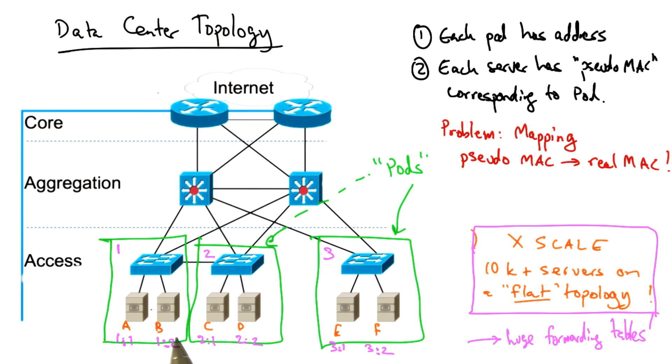Now, in such a data center topology, of course, these hosts are unmodified. So they're still going to respond to things like ARP queries with their real MAC addresses. So we need a way of dealing with that, as well as a way of mapping pseudo MAC addresses to real MAC addresses.